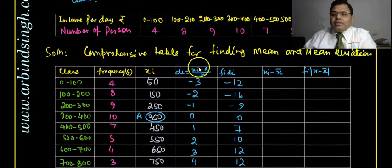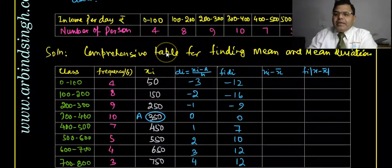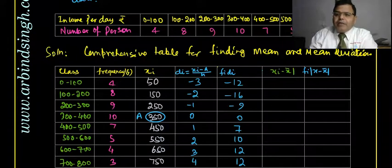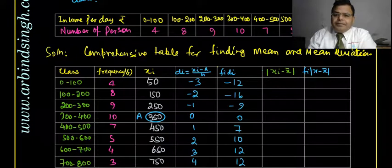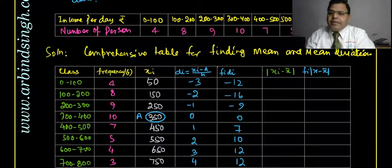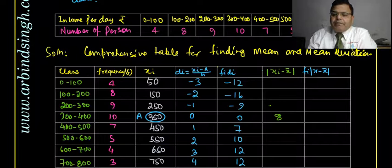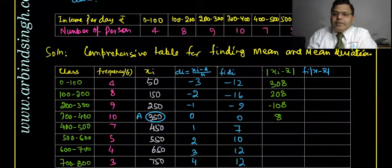With x̄ = 358, we now compute |xi − x̄| for each class mark. Starting from xi = 50: |50−358| = 308, then 208, 108. For 350: |350−358| = 8. For 450: |450−358| = 92, then 192, 292, 392. These are the absolute deviations from the mean.